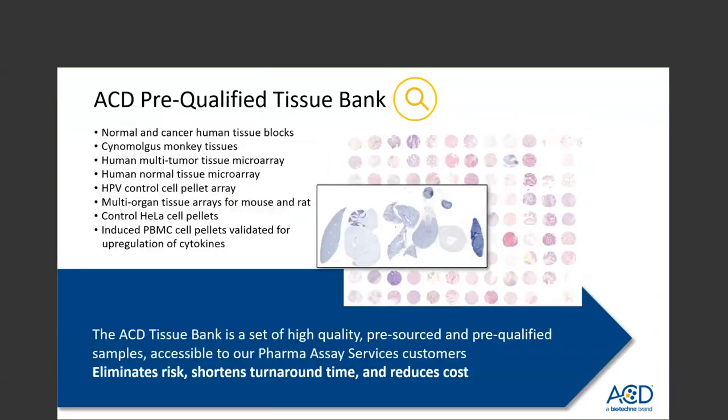A quick highlight about our pre-qualified tissue bank: these pre-validated tissues ensure high-quality samples and a faster turnaround with guaranteed RNA integrity. ACD can help source tissues without the need for setting up third-party vendors, and can also help with new sample collection. ACD will coordinate with embedding CROs to ensure samples are prepared according to guidelines for RNA preservation, thus eliminating risk, shortening turnaround time, and reducing cost for you.